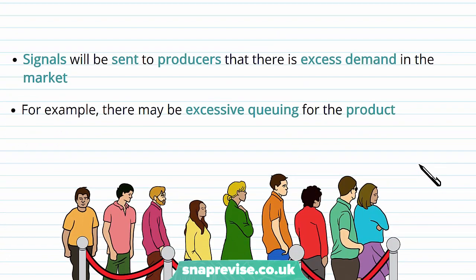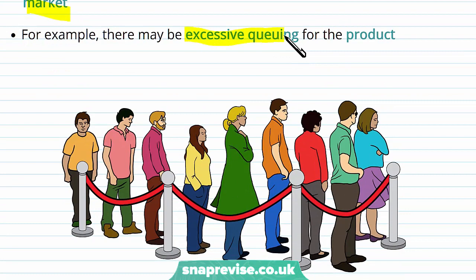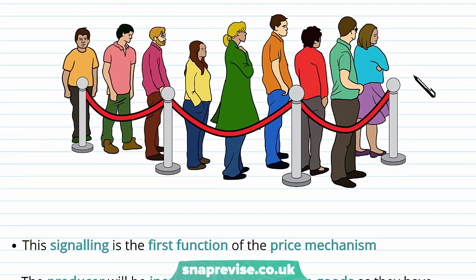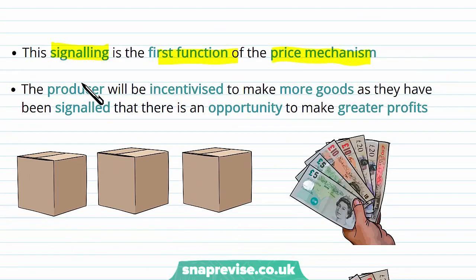Signals will therefore be sent to producers that there is excess demand in this market. For example, a signal might be that there's excessive queuing for the product. This signalling is the first function of the price mechanism.